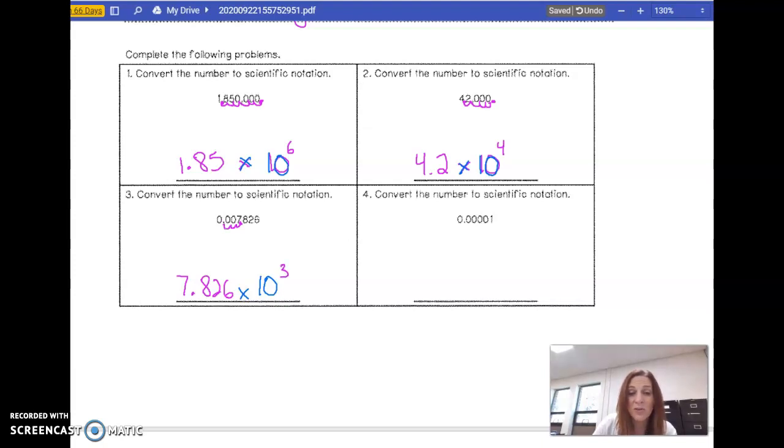Now, if you think of it as you move it from where you want it to where it is, that means you're going to the left. That's negative. Or you can think of 0.007826, that's a really small number. So we want to make that a negative exponent.